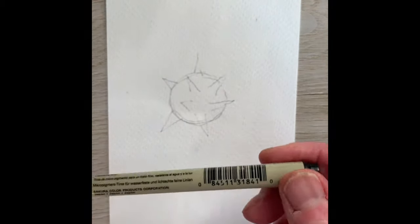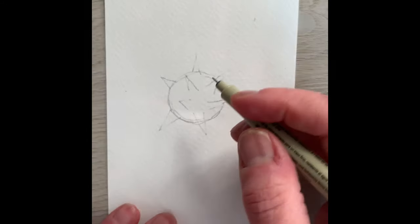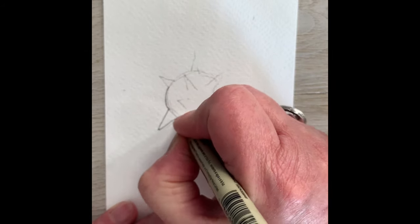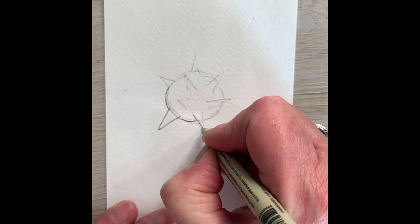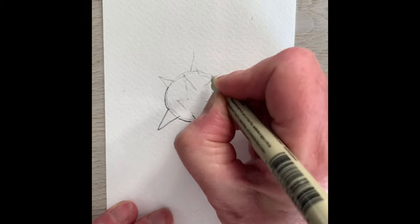Then I take my waterproof micron pen. I like using the 005 for the thinnest line possible, and I fill in and go over the lines I want to keep with my pen.